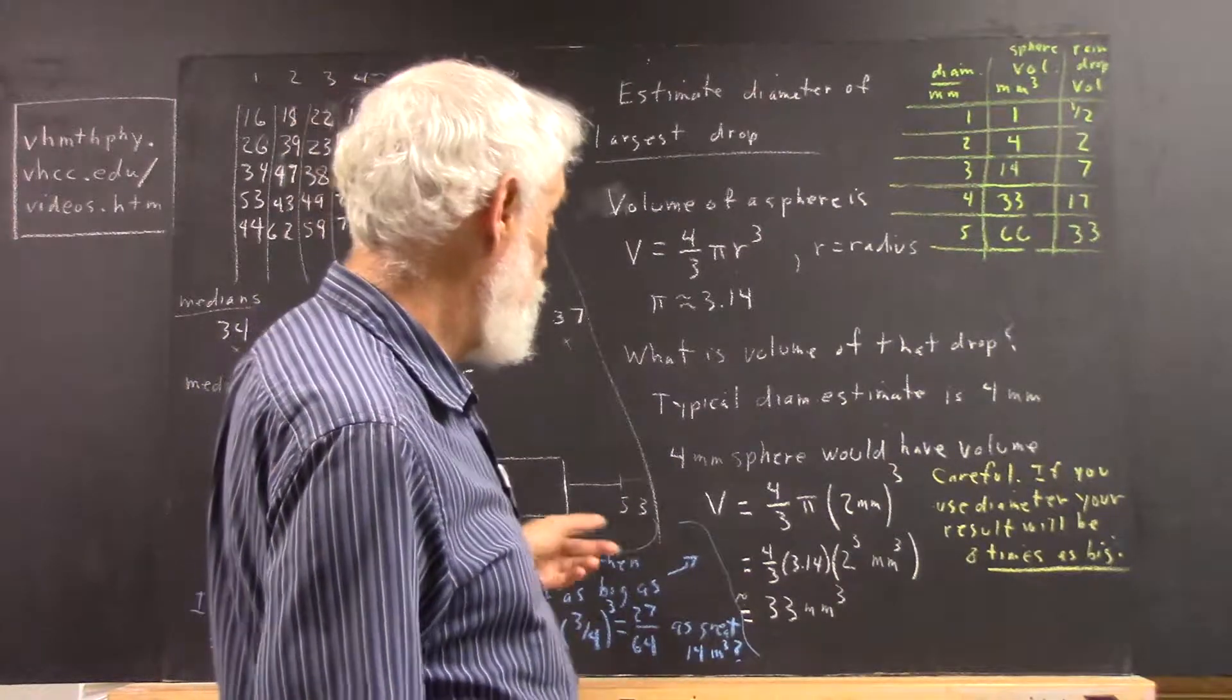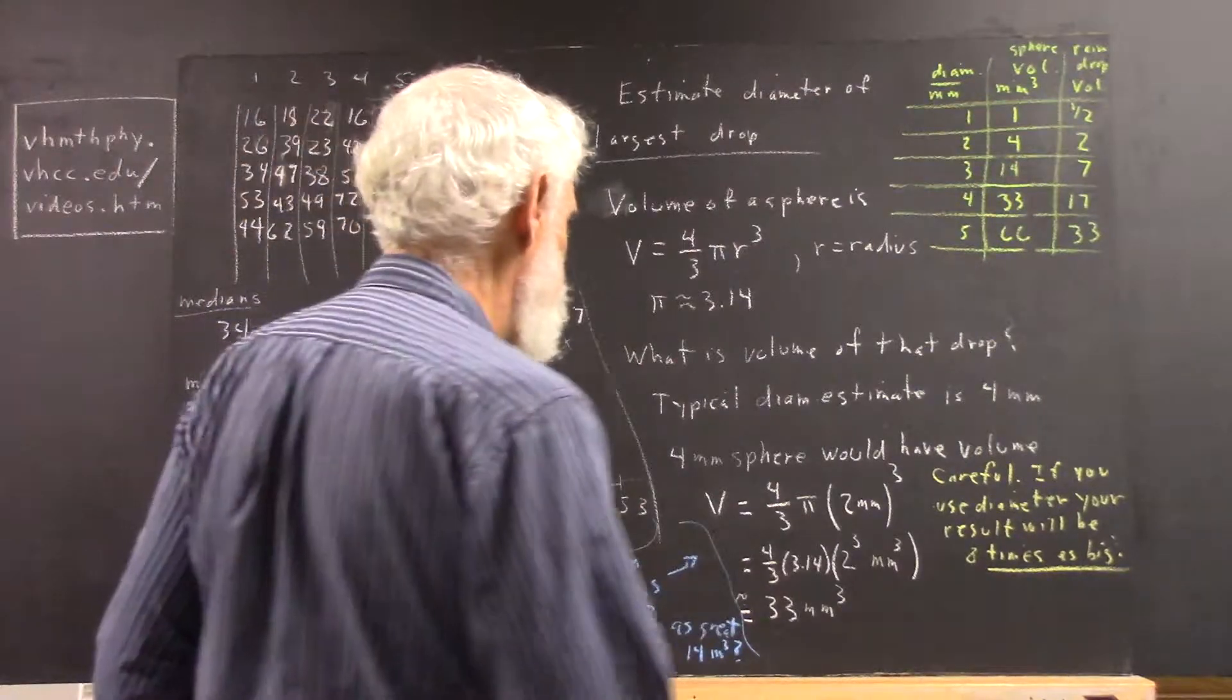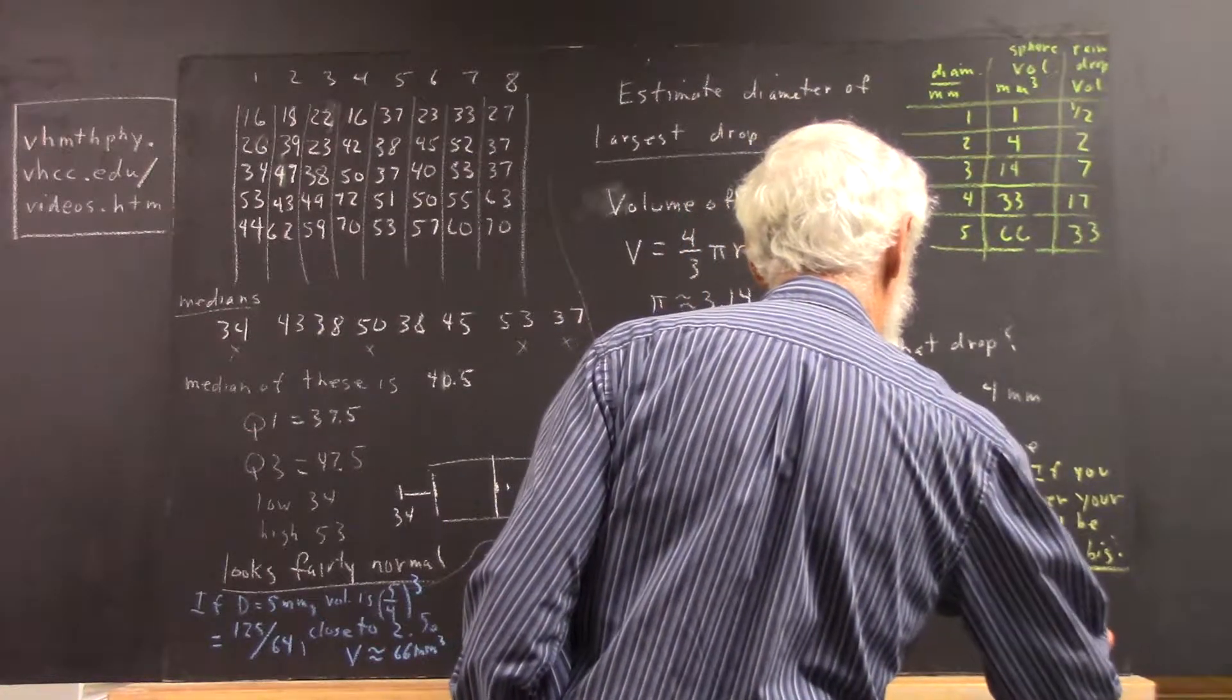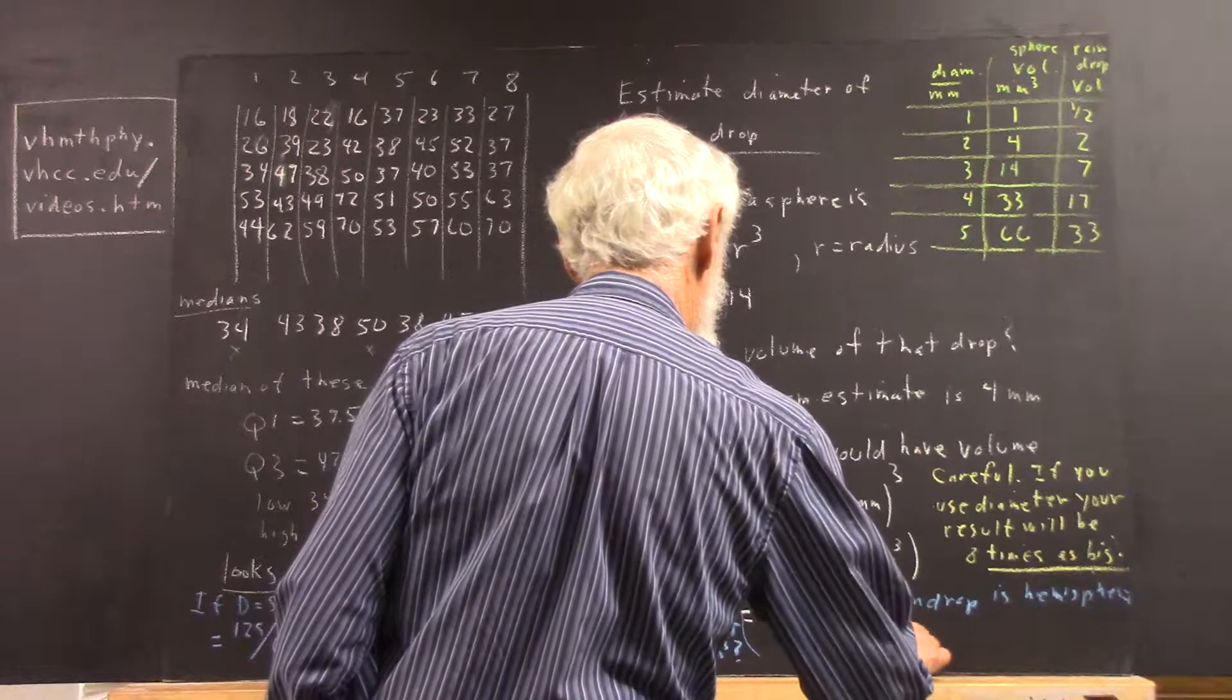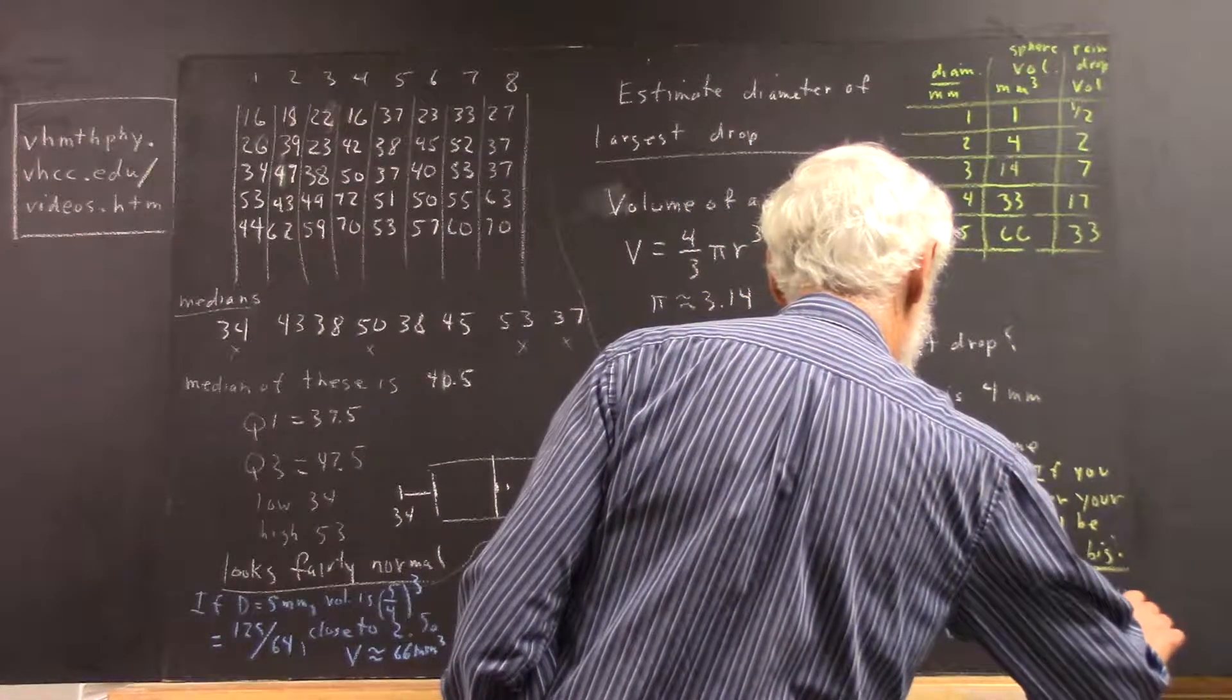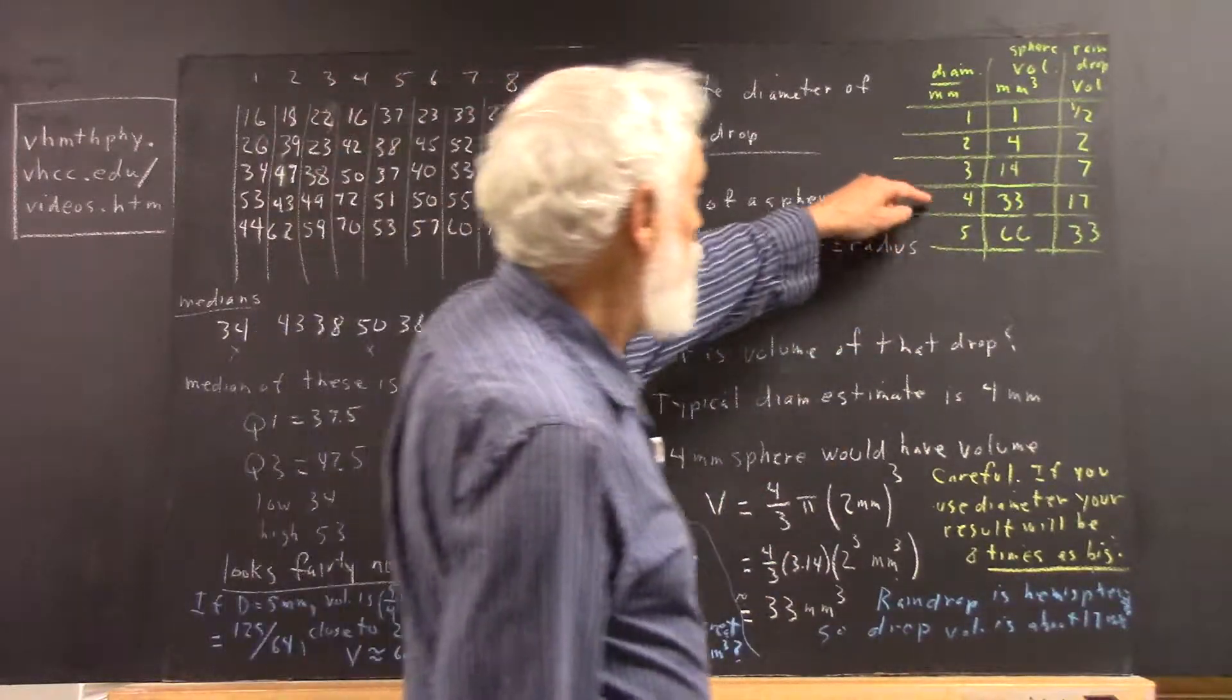Now, these aren't really spheres. They're actually hemispheres, so we'd have to cut that in half to get the hemisphere. So I'm going to make a note here. The raindrop is a hemisphere. So the drop volume is about 17 millimeters cubed. Half of 33 is 16.5. I rounded that up to 17. And then I put that on the table here.